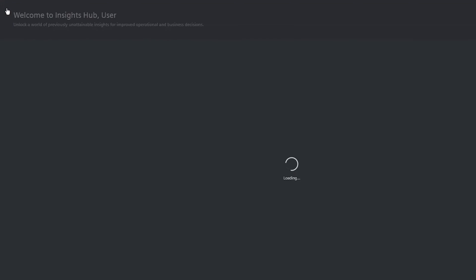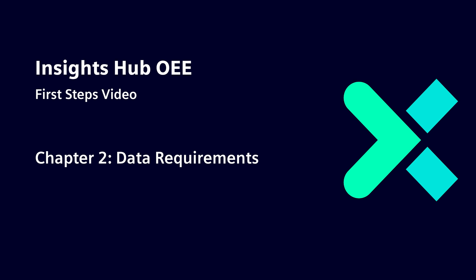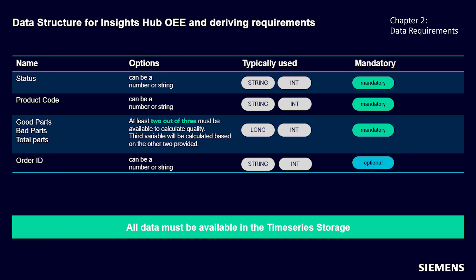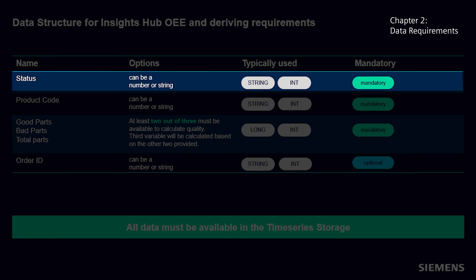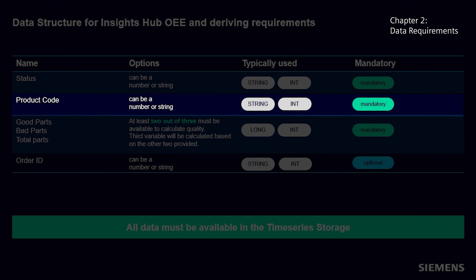You should now be able to see InsightsHub OEE on your launchpad. To calculate OEE and to derive the insights, the application requires different types of data. In the table on the screen, you can see the different required or optional data points. First, let's start with the status. This variable can either be a number or a string and is the essential data point to determine the availability of the machine. The application currently allows only one status data point per machine or line. As a second data point, let's look at the product code, which is relevant to determine the performance of the machine. The product code is mapped in the configuration with the design speed, which is used to calculate the theoretical production of the machine. This data point is also mandatory.